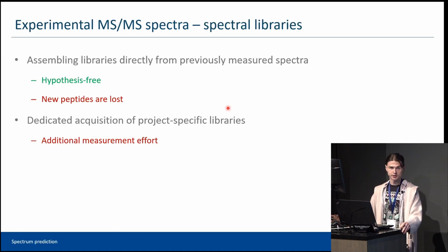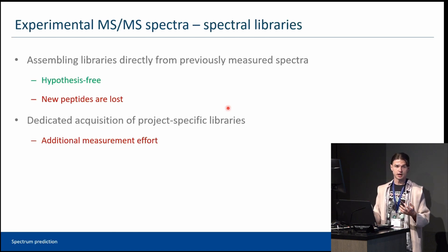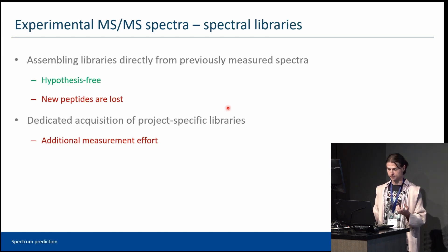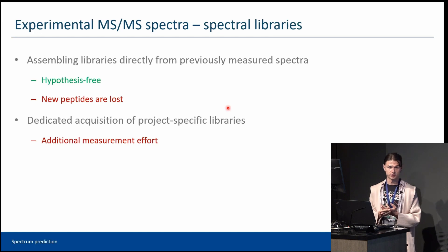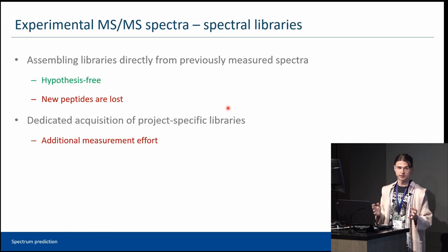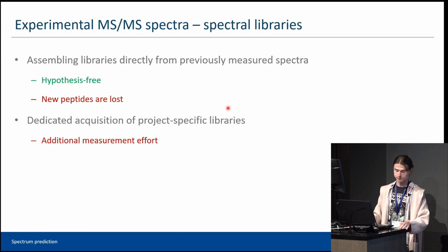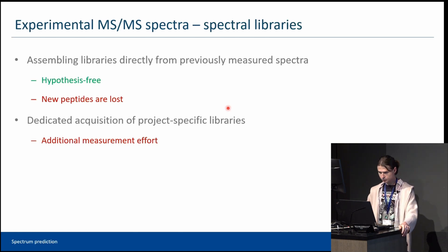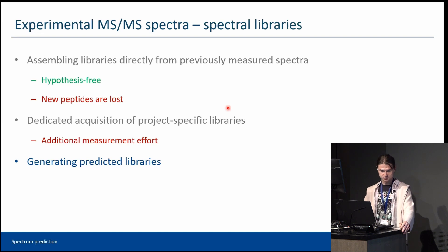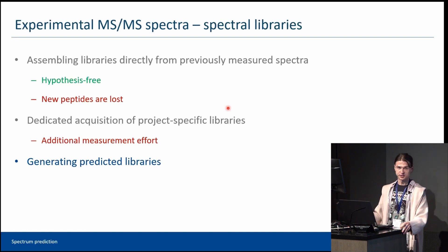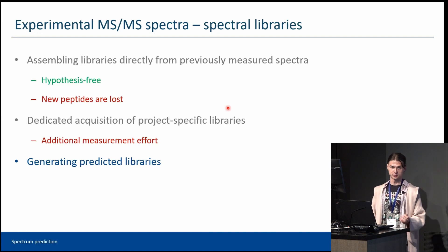This method is applied only when the benefits from increased sensitivity strongly outweigh the downsides. One of the areas for its application is DIA, because due to many co-fragmentations, DIA spectra are more complex, and this additional information from spectral libraries is useful to tackle the contributions of different peptides in a spectrum. But there is also a third solution: to generate artificial predicted libraries.